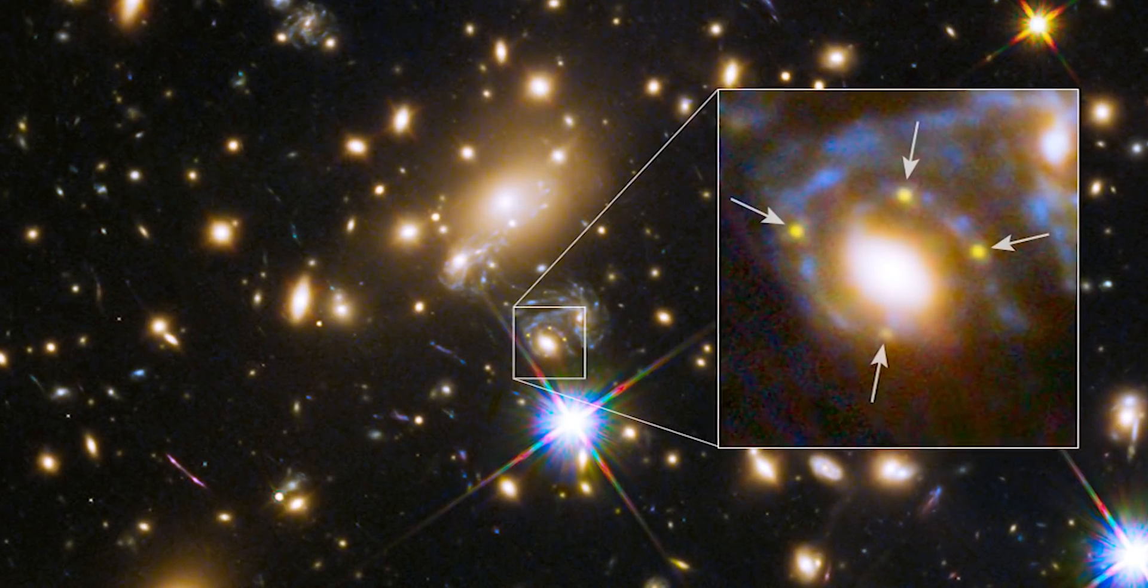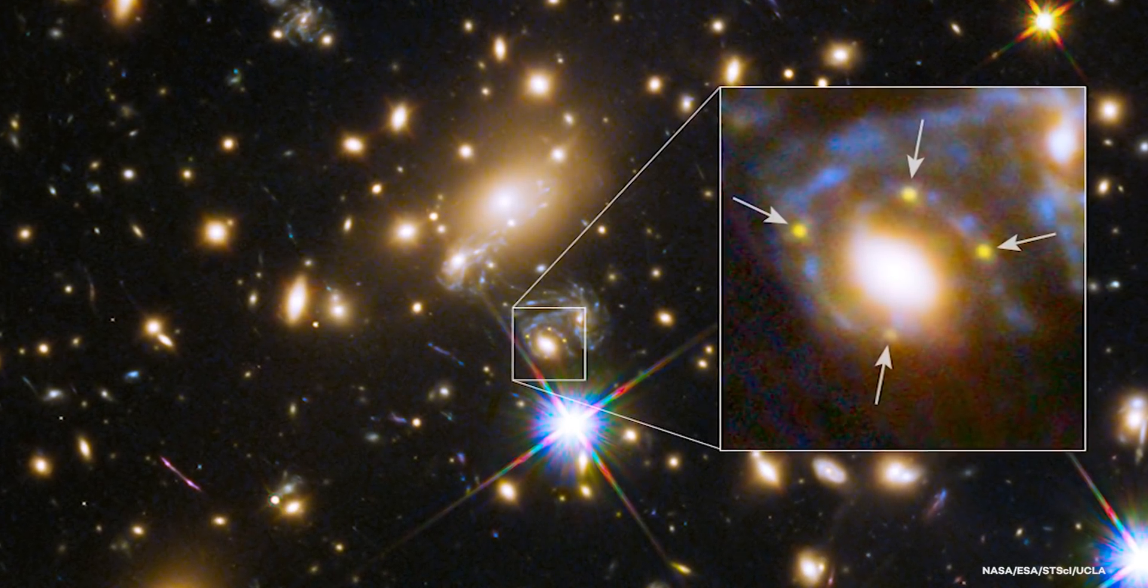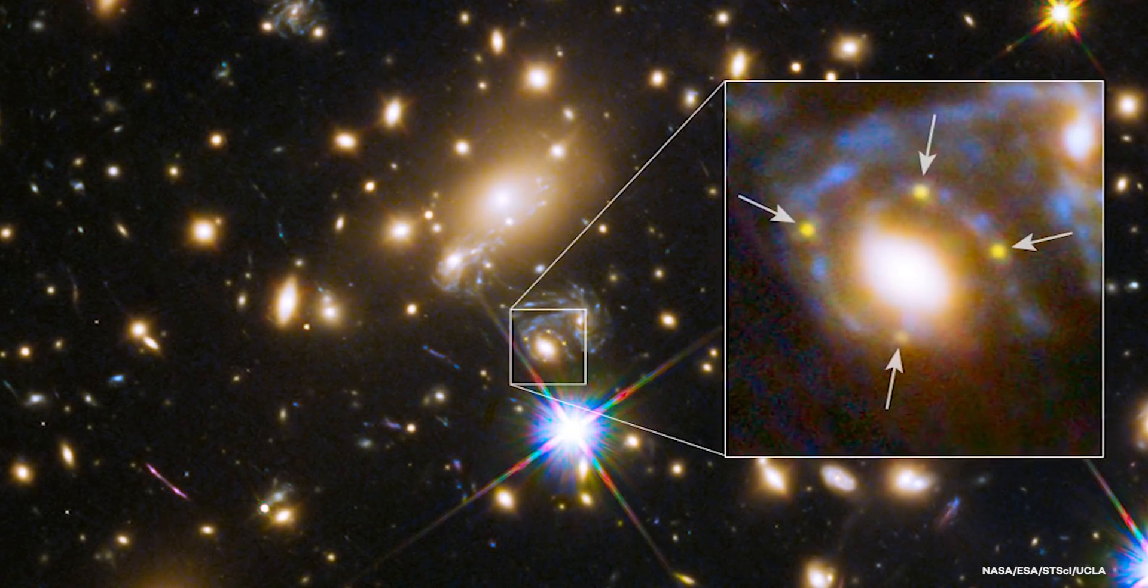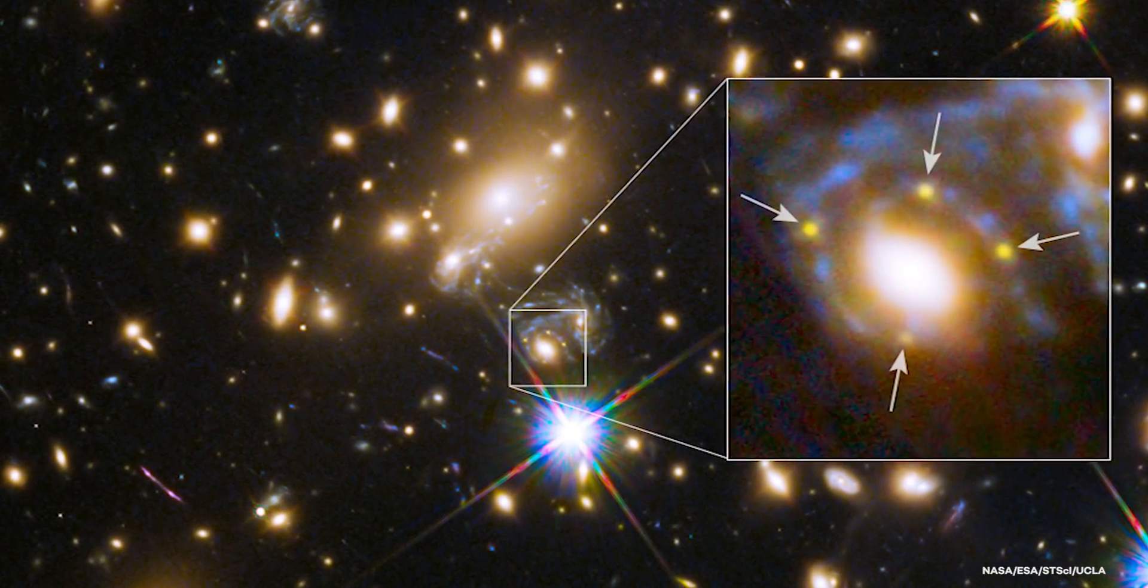Because gravitational lenses are solely gravitational effects, they magnify all wavelengths of light identically, whereas dust emits light differently at different wavelengths depending on its temperature.